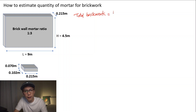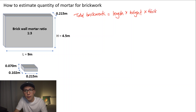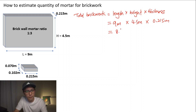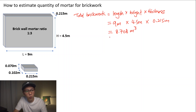The first thing we have to do is identify the total brickwork volume, which is length of the wall times height of the wall times thickness of the wall. The length is 9 meters, the height is 4.5 meters, and the thickness is 0.215 meters. So the total brickwork volume is 8.708 cubic meters.